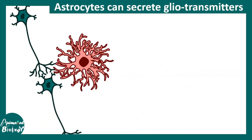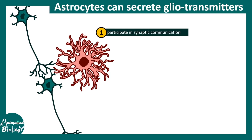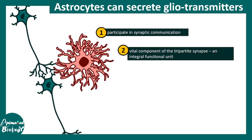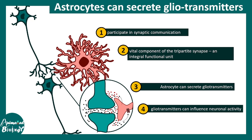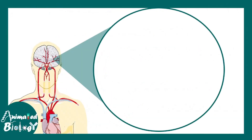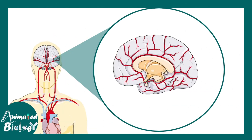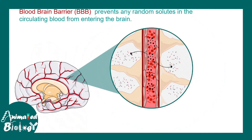Astrocytes can also secrete gliotransmitters. This is a relatively new concept, not yet in textbooks. It is thought that astrocytes can participate in synaptic communication — specific neurotransmitters secreted by neurons can also be received by astrocytic endfeet, and astrocytes can in response release gliotransmitters which can influence neuronal activity. So they talk to each other in a bidirectional way, and the implications of this bidirectional crosstalk is still an active area of research.